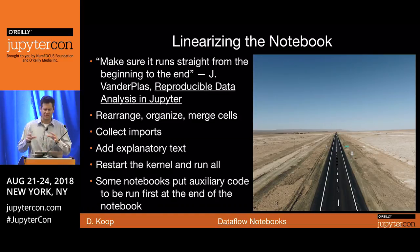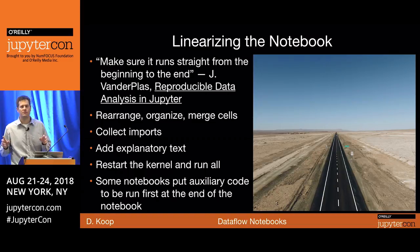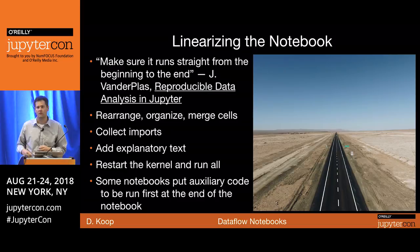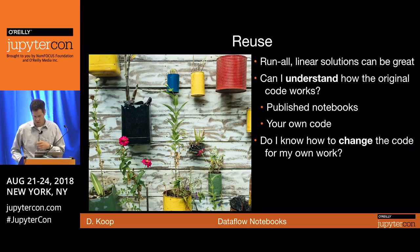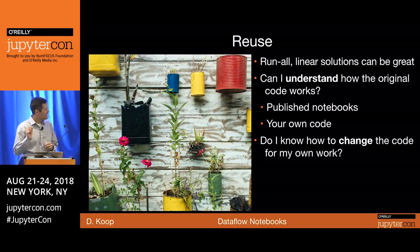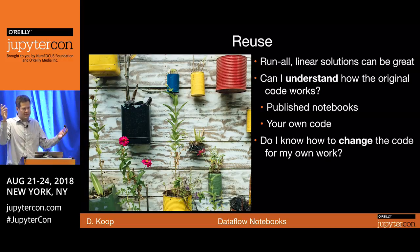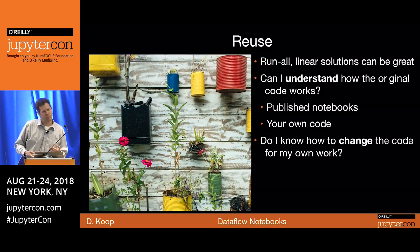Some notebooks have auxiliary code people want to run first and then go through the rest. This can be useful with NB Viewer — you want to output a notebook with key conclusions at the top, without pages of code to scroll through to get to interesting conclusions and visualizations. But beyond just clicking a button and having everything reproduce, I want to get into the idea of reuse. Run-all linear solutions are great, but can I actually understand how the original code works? Can I go back to my own code two years later and really understand and modify it?